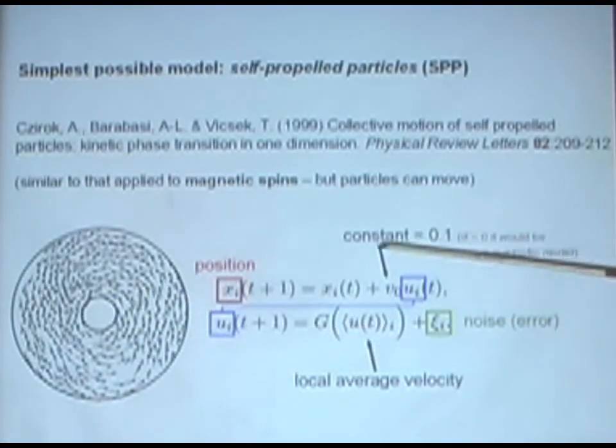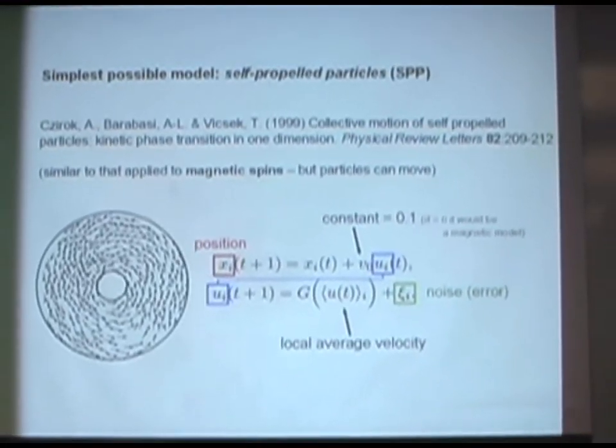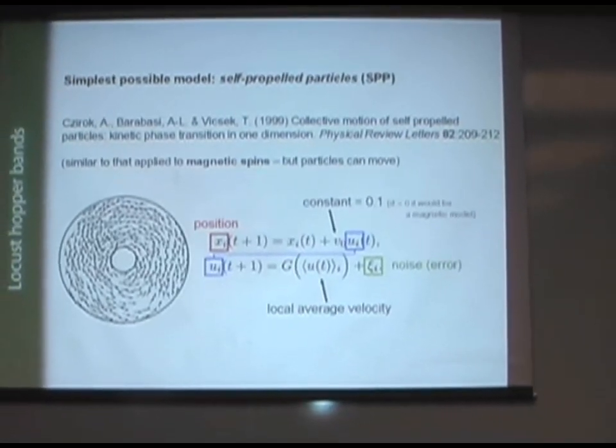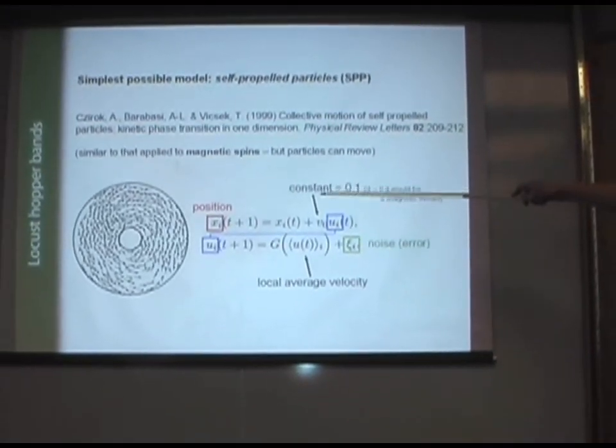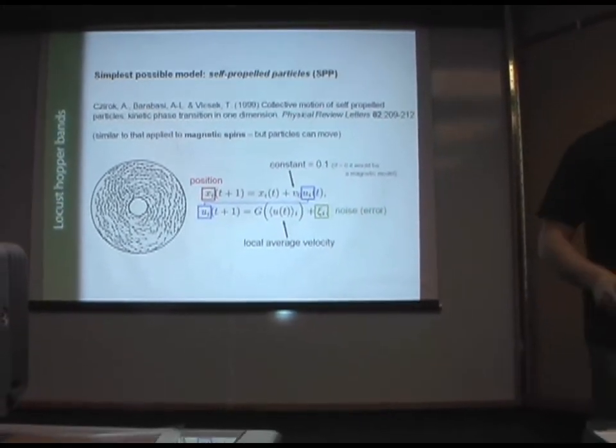But here, in the one-dimensional model, individuals' position is affected by the local average velocity of the other individuals. There's some noise. And the difference from a magnetic-type model is that they have a constant propulsion, a constant speed.